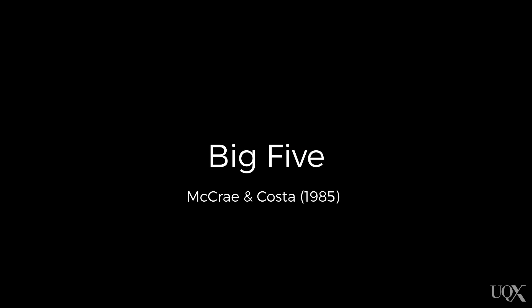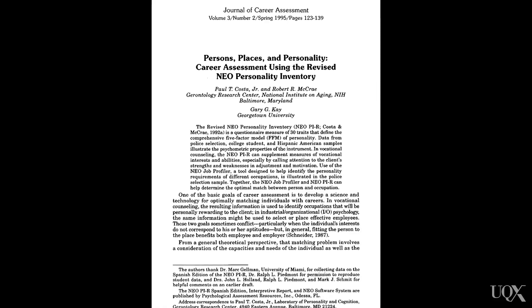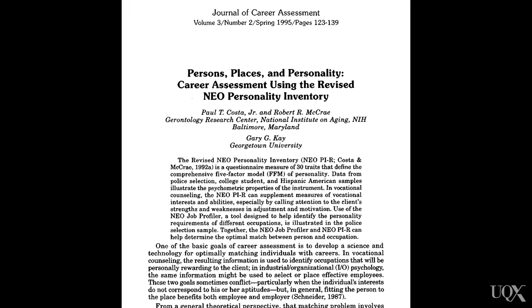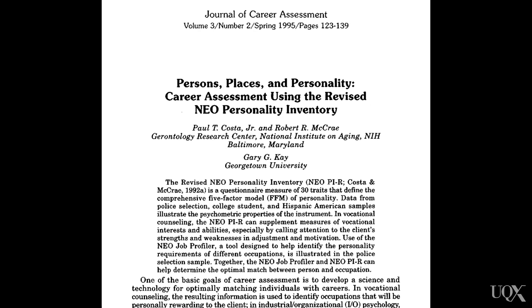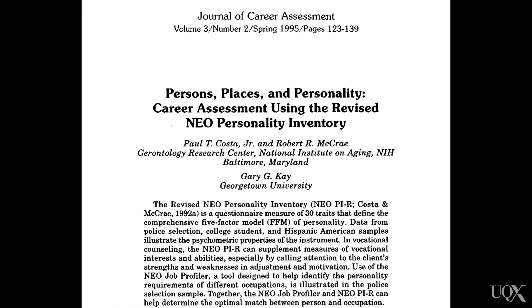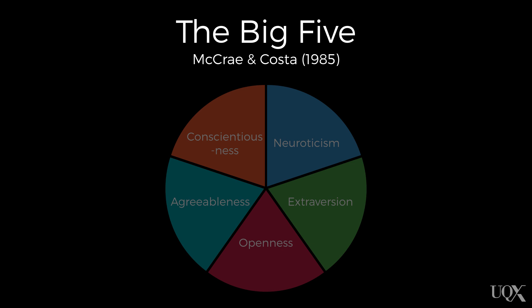Then there's Neil McRae and Paul Costa's Big Five, which says there are five factors to personality. This is probably one of the more popular measures for research and sometimes for recruitment as well. It's based on a different set of words, but it's based on factor analysis as well. According to the Big Five, personality consists of five primary dimensions.